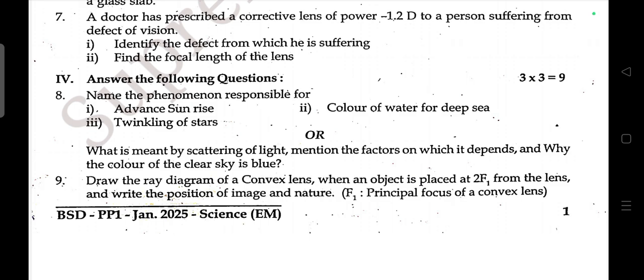Draw a ray diagram of a convex lens when an object is placed at 2F1 from the lens. Write the position of the image and its nature. F1 is the principal focus of a convex lens.